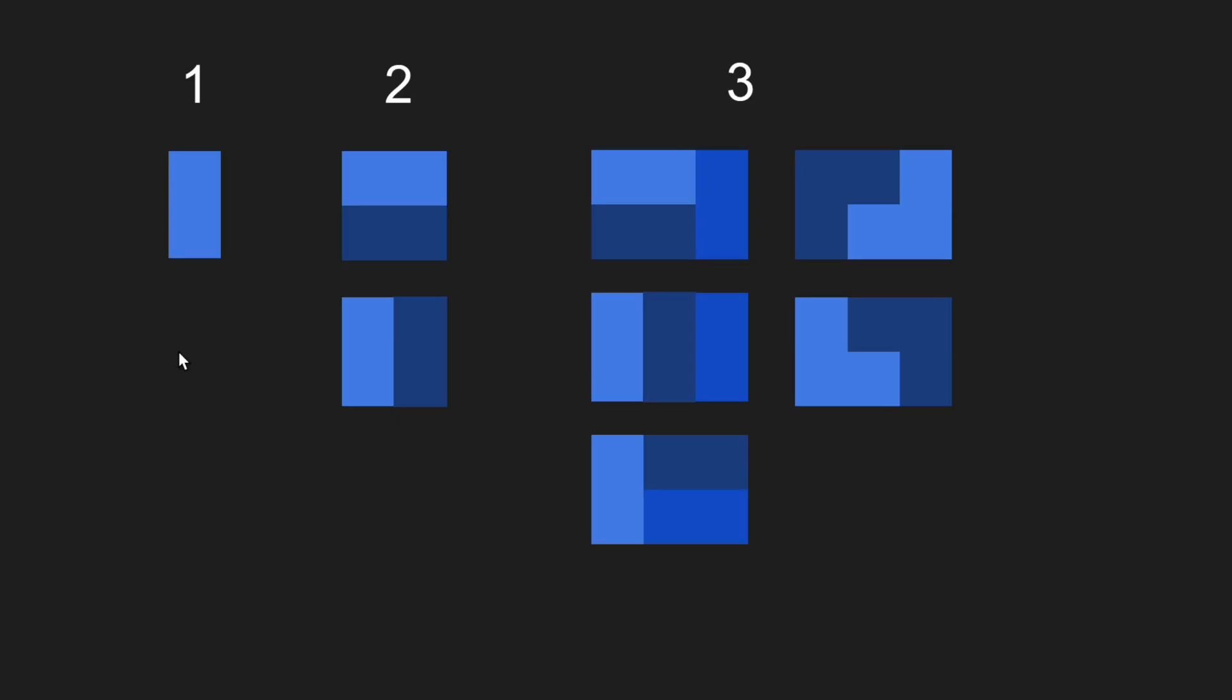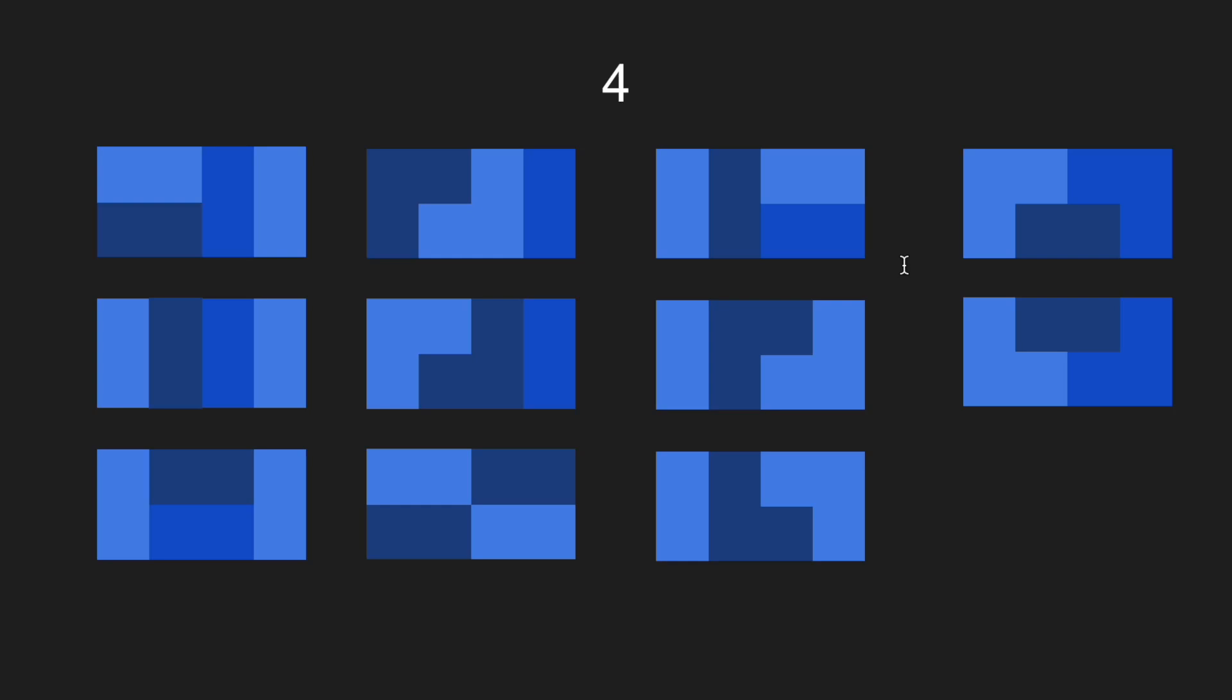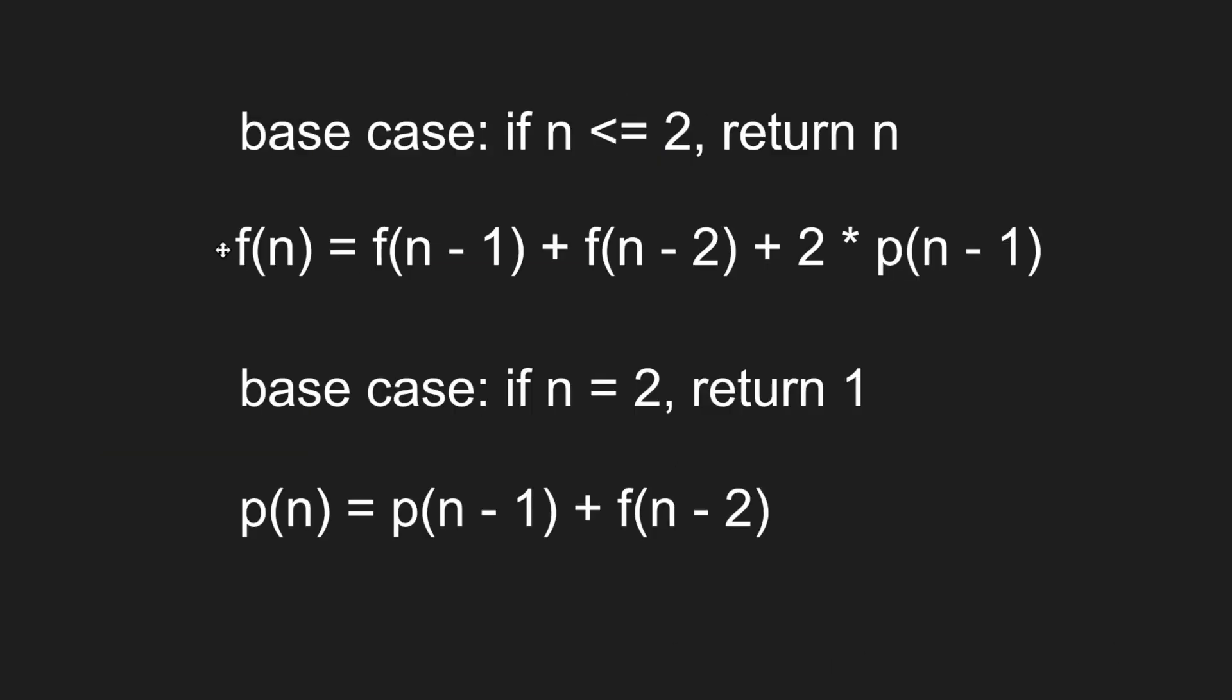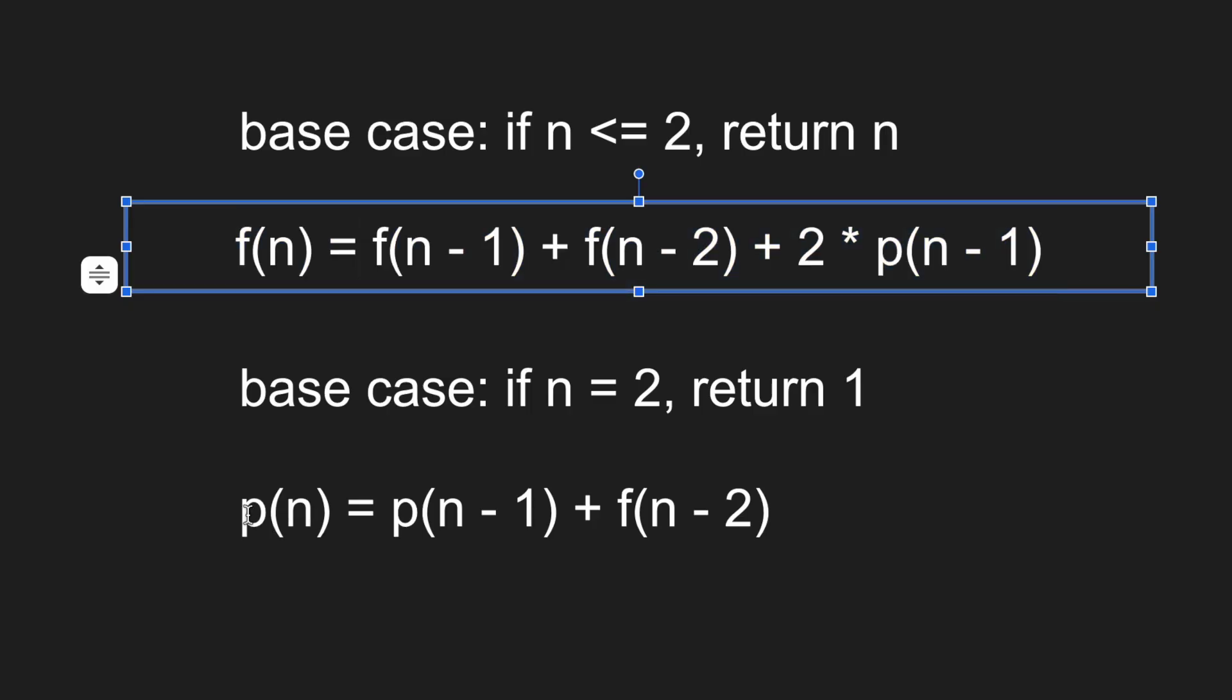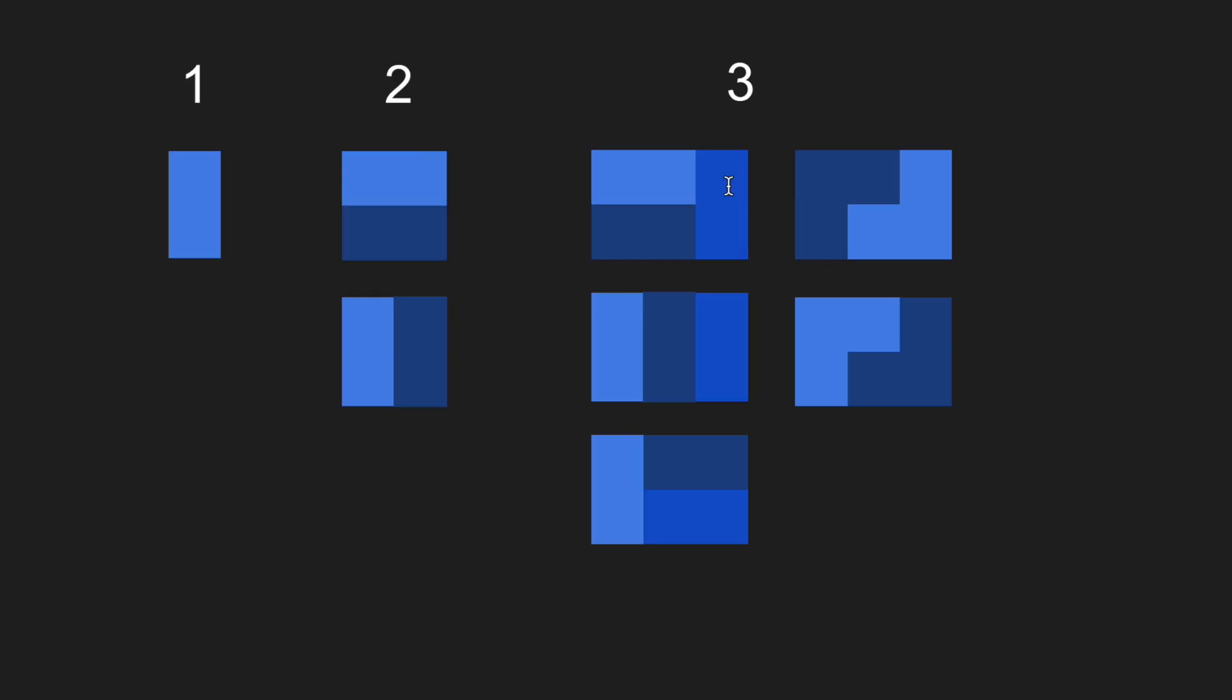So I will show some samples and then we can figure out the recursive formula. So for one, we can form one way. When n is two, we can form two ways. When n is three, we can form five ways. And when n is four, we can form 11 ways. So this is the main recursive formula that we will be using. And then we will also need this right here because of the p function right here. So f would stand for if the column is fully filled and p is if it is partially filled.